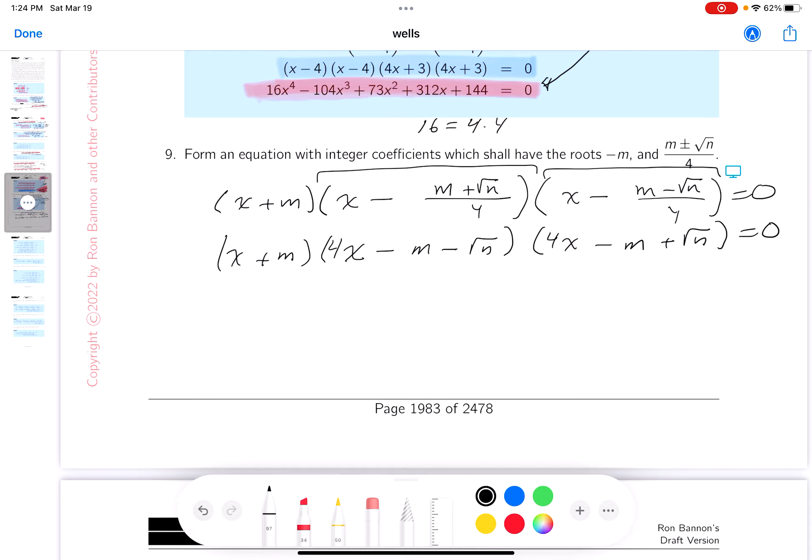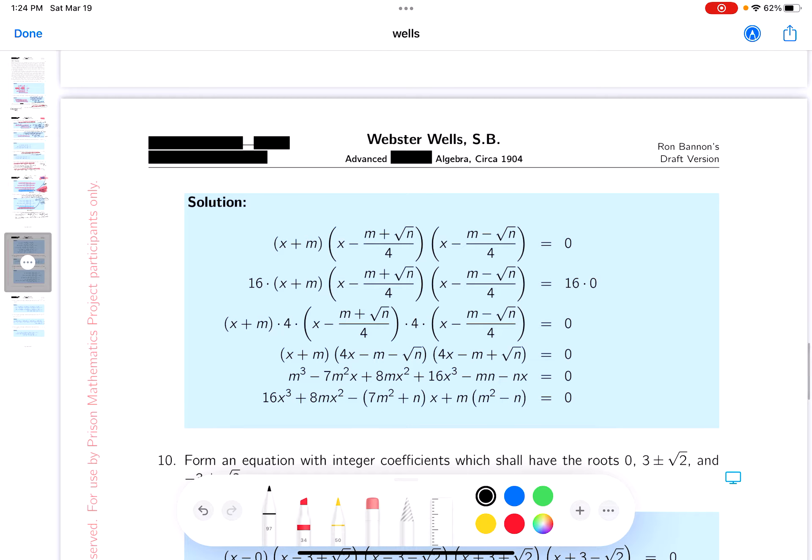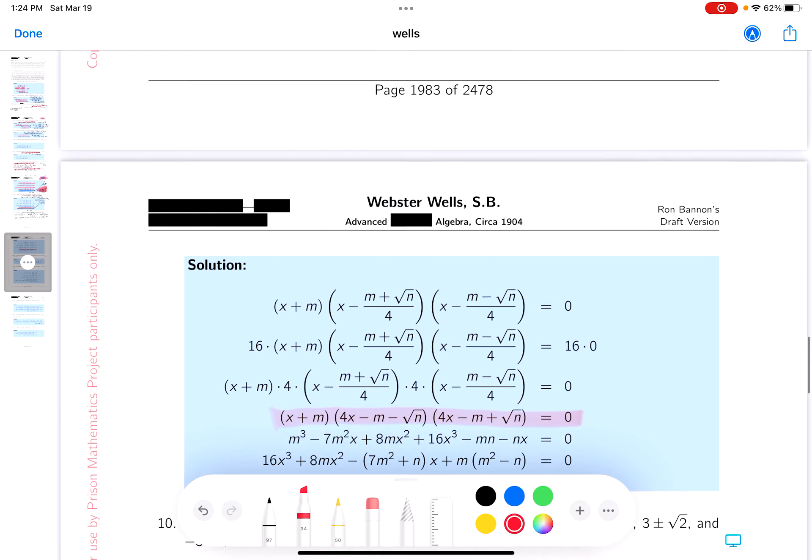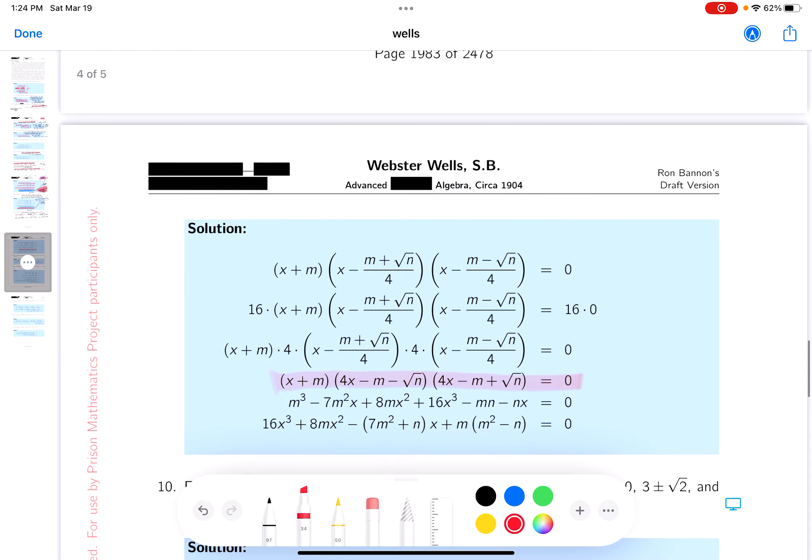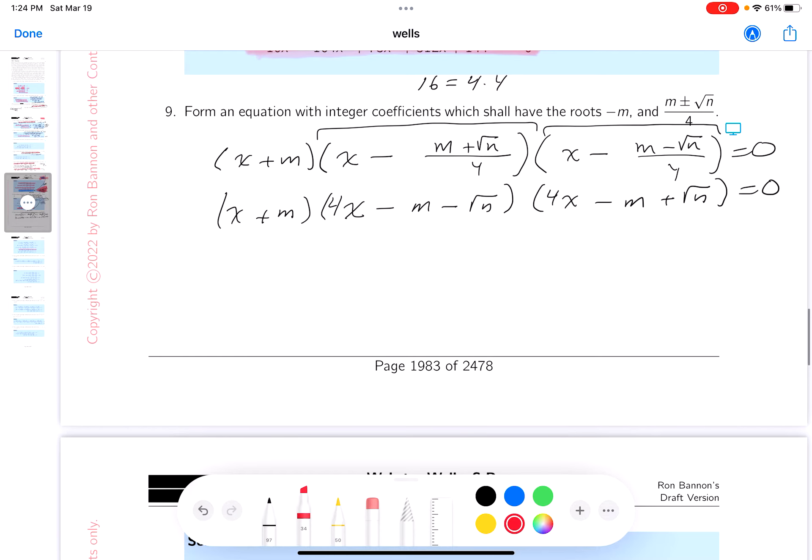I know this is difficult. Before I go forward on it, though, I want to make sure you know that we need to meet this milestone here before I can go forward. Did I get it? x plus m, 4x minus m minus root n, 4x minus m plus root n. We got it. We're there.